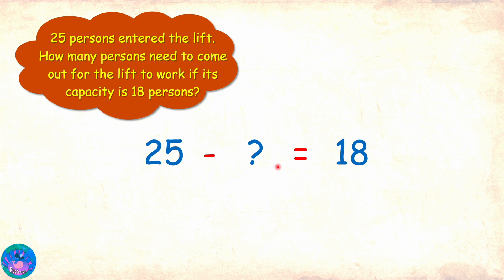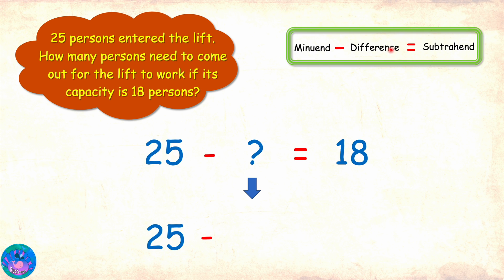Subtrahend is unknown and the difference is 18. So we need to find the subtrahend. Now we have learnt that if we know the minuend and the difference, we can find the subtrahend by taking the minuend and subtracting the difference from it. 25 minus 18 equals 7. So 7 is the number of persons that need to come out. Amazing!